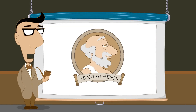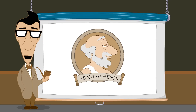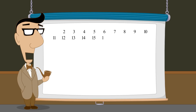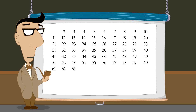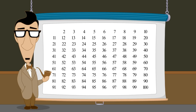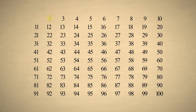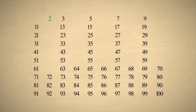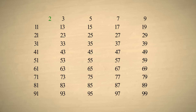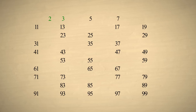To determine which natural numbers are prime, we can use a process invented by the ancient Greek mathematician Eratosthenes. This process, called the sieve of Eratosthenes, involves eliminating all composite numbers from a list of natural numbers — the numbers that are left are prime. Let's try it for the natural numbers two through one hundred. We start by marking two as the first prime number, then we eliminate all numbers divisible by two, since these are composite. Once we eliminate these, the next number in our list, three, will be prime. We then eliminate all numbers divisible by three. Now the next number in our list, five, will be prime. We then eliminate all the numbers divisible by five.